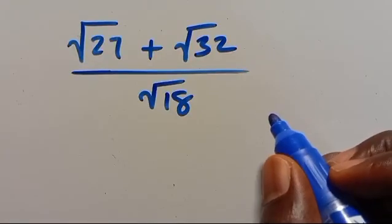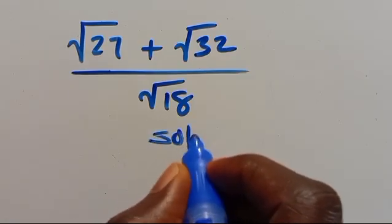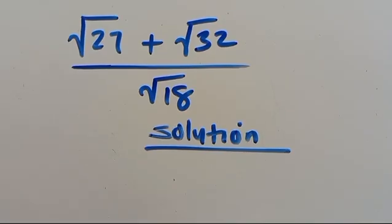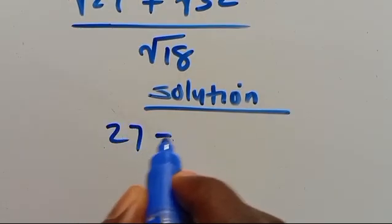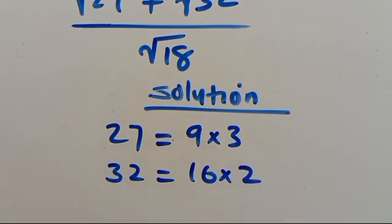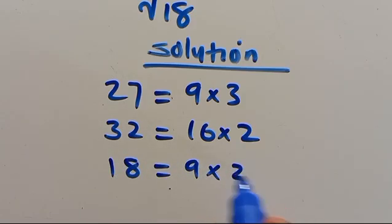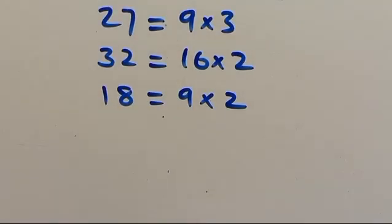Hi, welcome back to my YouTube channel. In this video, how can we simplify this without using a calculator? So let's have its resolution. From here, let us note that we can have 27 as 9 times 3, we can also have 32 as the product of 16 times 2, and we can also have 18 as a product of 9 times 2.